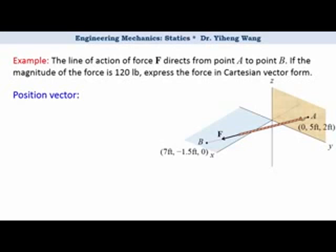So we start with finding the position vector r_AB from point A to point B. It equals to the position vector of the end point, point B, minus the position vector of the start point, point A.